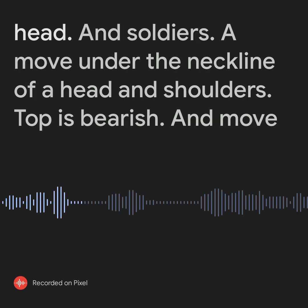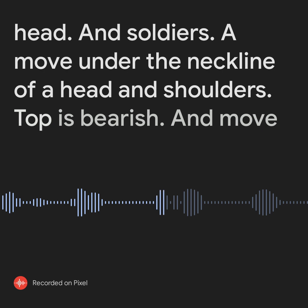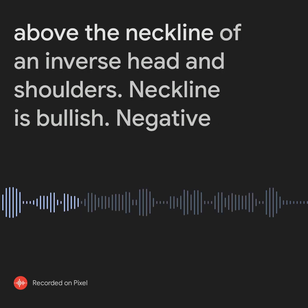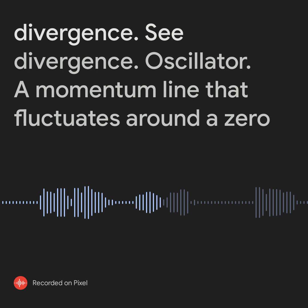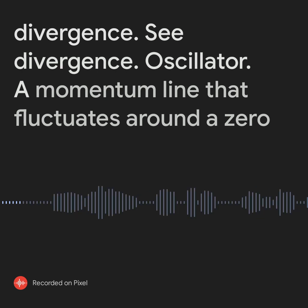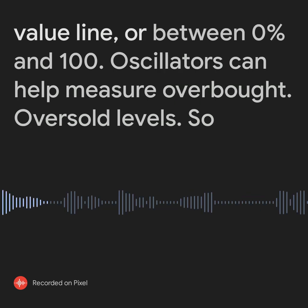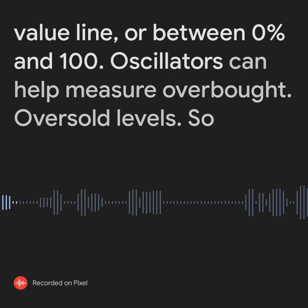Neckline: a line connecting the lows of the head in a head and shoulders formation, or the highs of an inverse head and shoulders. A move under the neckline of a head and shoulders top is bearish, and a move above the neckline of an inverse head and shoulders is bullish. Negative divergence: see divergence. Oscillator: a momentum line that fluctuates around a zero value line or between zero percent and one hundred percent.